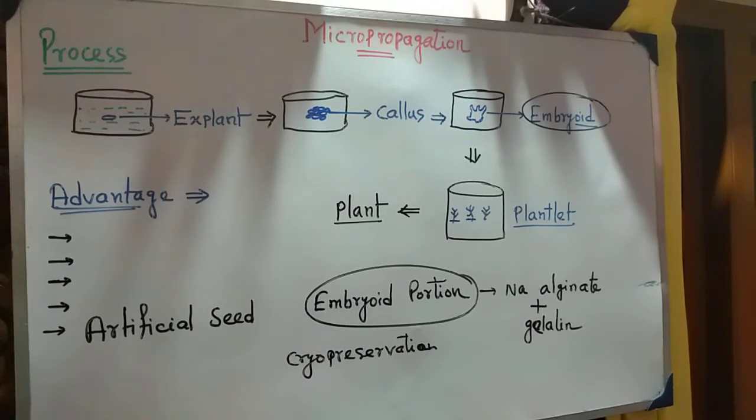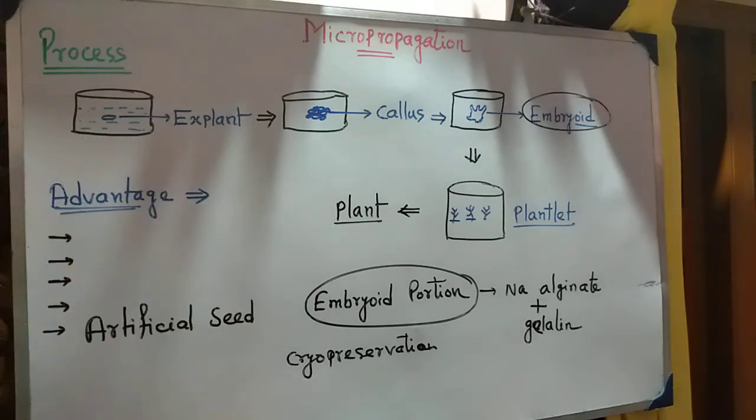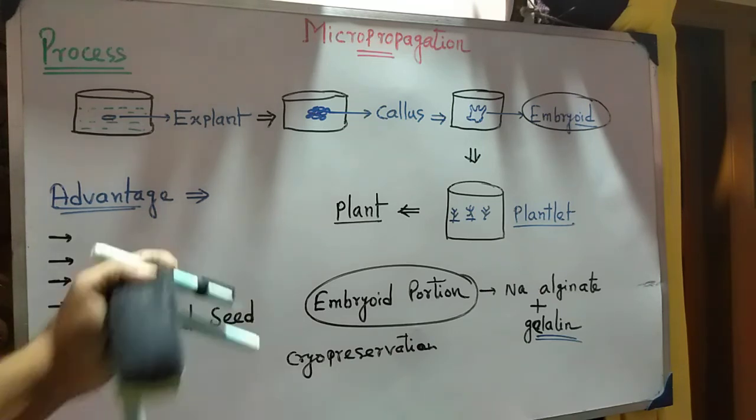The plant will grow from the artificial seed. This coating, like a membrane, helps the embryoid grow into a plant. So the artificial seed is the best method.